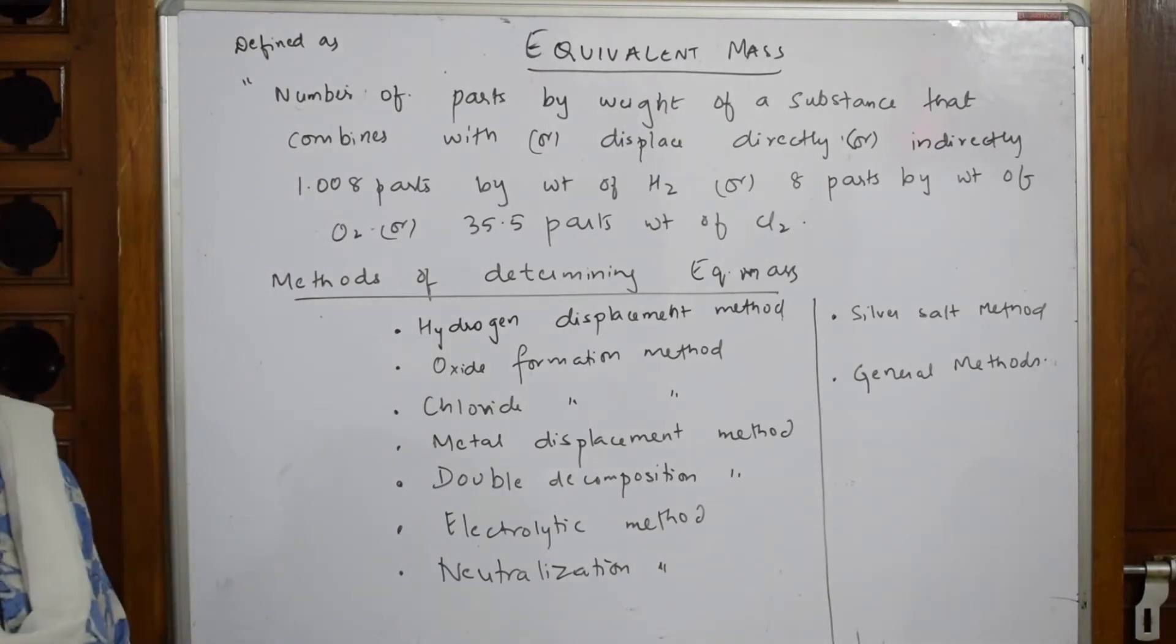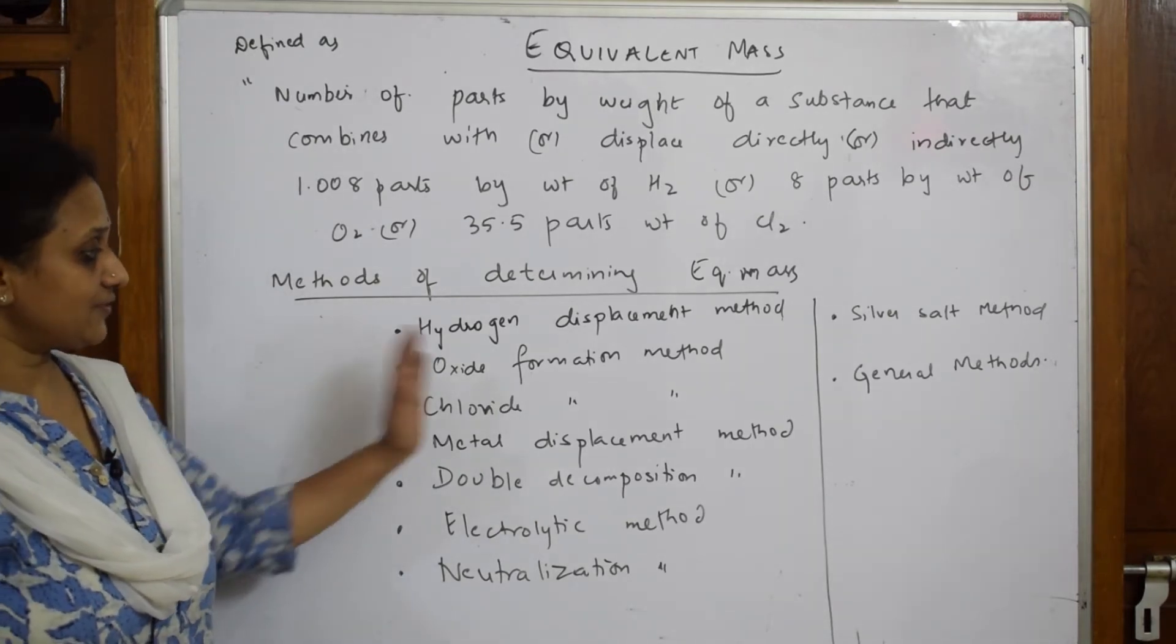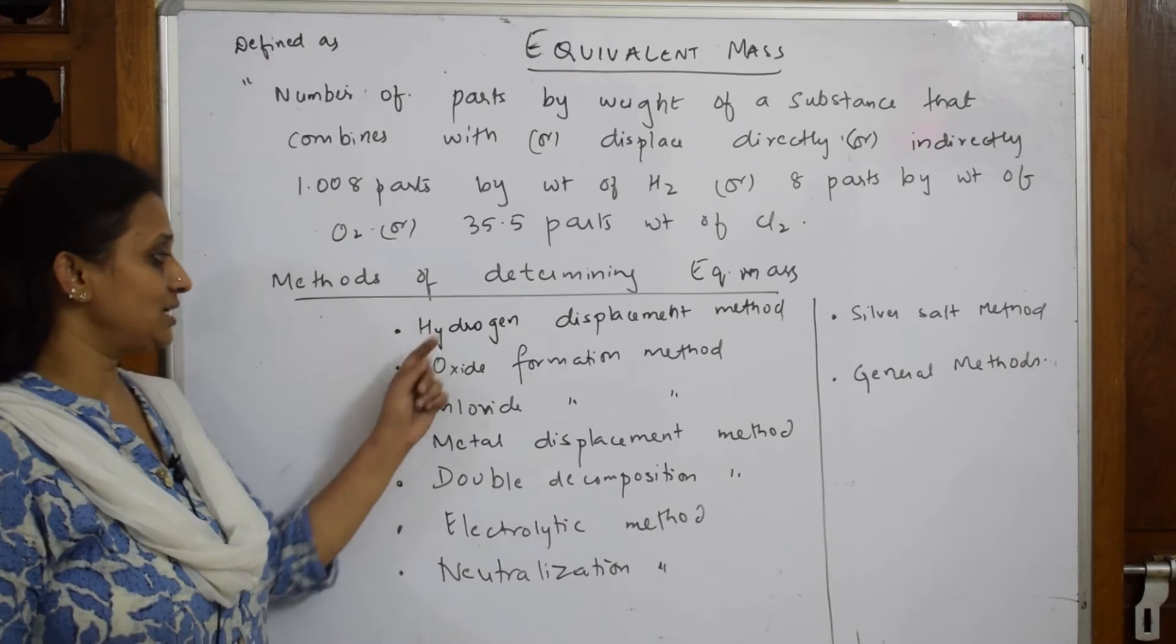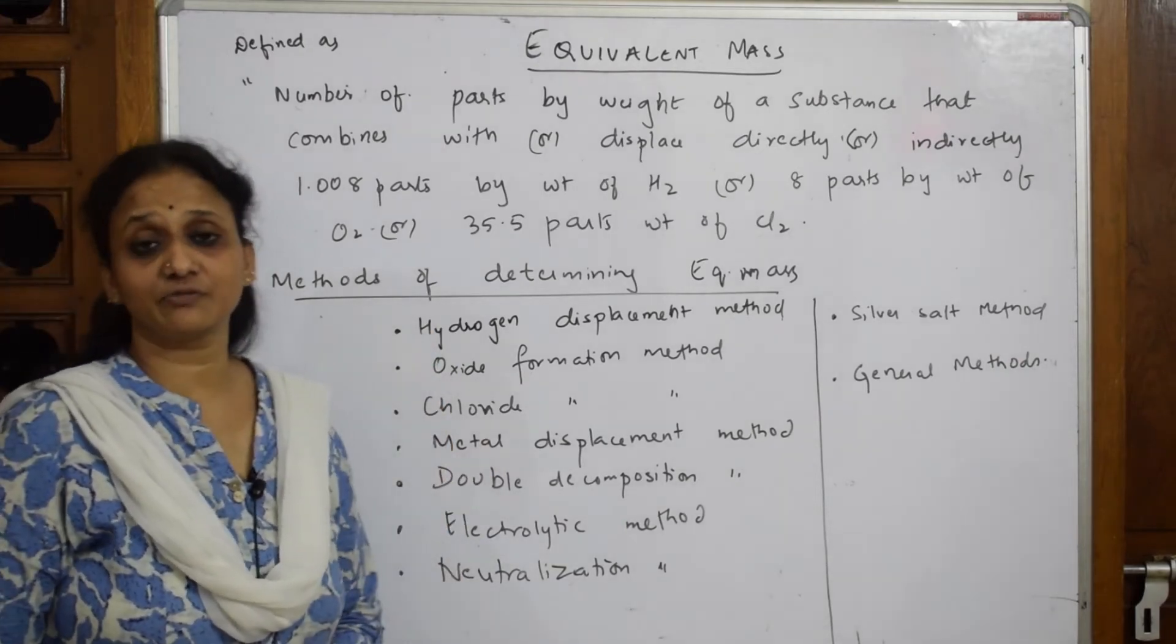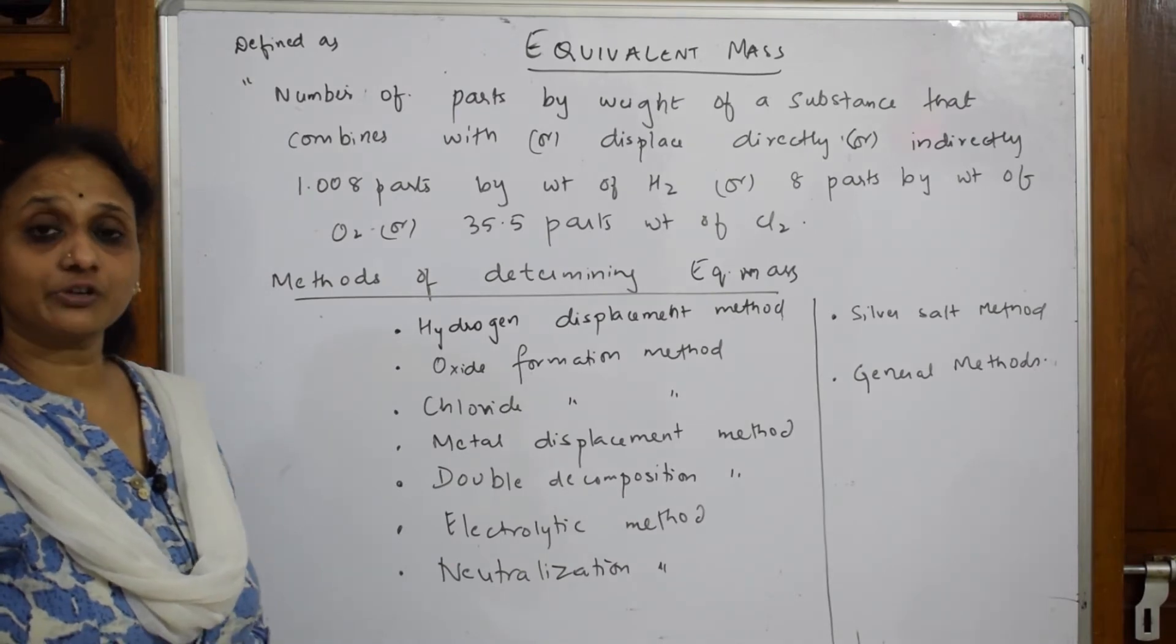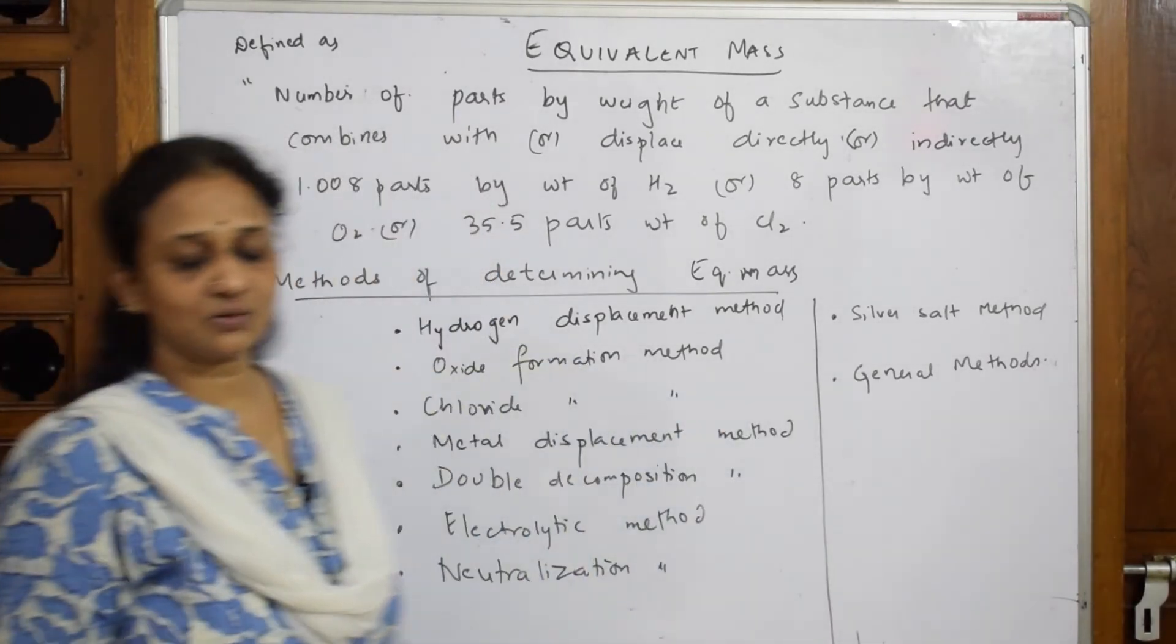Why did they give only specifically hydrogen, oxygen, chlorine? Basically the different methods for determining equivalent mass. Everything has a separate formula. 1, 2, 3, 4, 5, 6, 7, 8, 9 methods are there for determining equivalent mass. So for your prescribed NCERT syllabus you have only general methods. What are those? We will see.